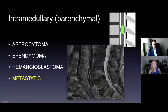Metastatic disease can also be parenchymal, though here we're showing drop mets along the cauda equina. You already know this person has cancer — they likely have tumor in the brain or elsewhere in the spine. On the sagittal post-contrast, you can see osseous metastatic disease with abnormal enhancement in the vertebral bodies, as well as small enhancing masses along the cauda equina. On sagittal T2 you can just barely see these little masses with the nerve roots.